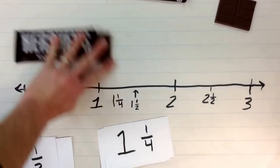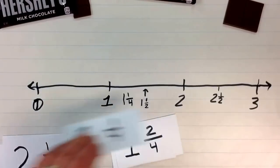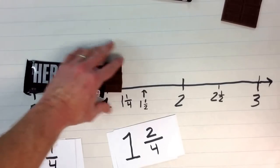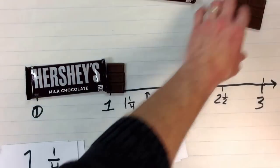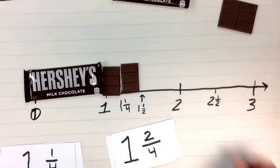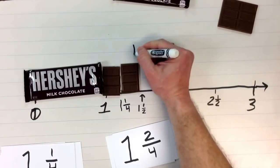Let's look at another one. What if we had one and two fourths candy bars? That would take us to right about here, which you'll notice is already being used by one and a half.